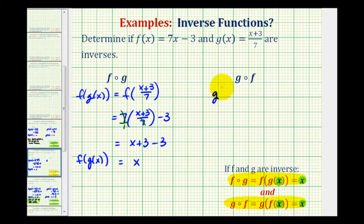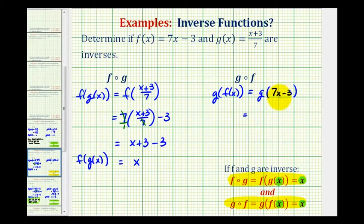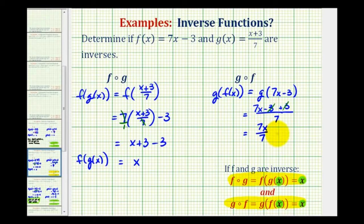So we'll go ahead and write this as g of f of x. Now notice the inner function is f of x, which is equal to seven x minus three. So this is equal to g of seven x minus three, and this becomes the input into function g. So we'll substitute seven x minus three for x here. We'll have seven x minus three plus three, all divided by seven. If we simplify the numerator, notice how we have minus three plus three — that's zero. So we have seven x all over seven, which does simplify to x. So g of f of x is also equal to x. Therefore these two functions are inverses.